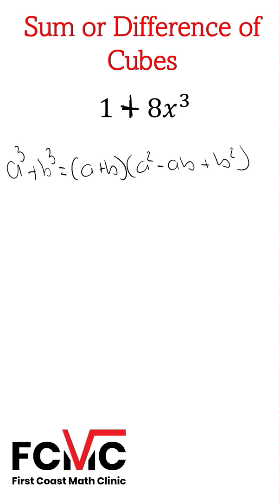So we need to figure out what our a and b values are. What are we cubing to get one? Well, that's going to be one. That's going to be our a value.